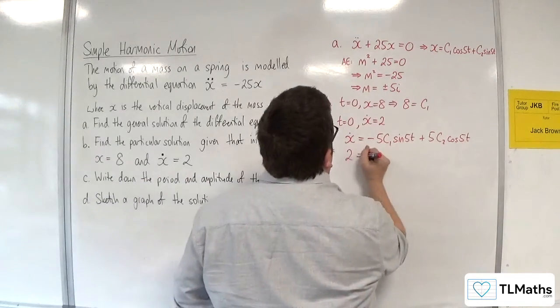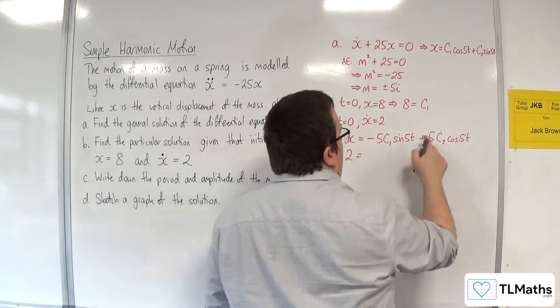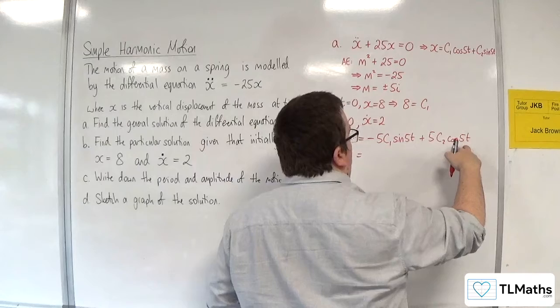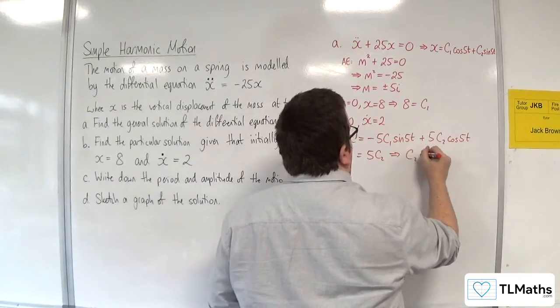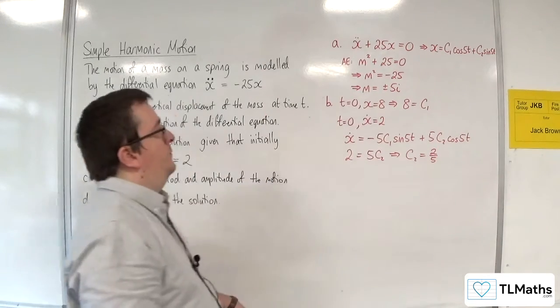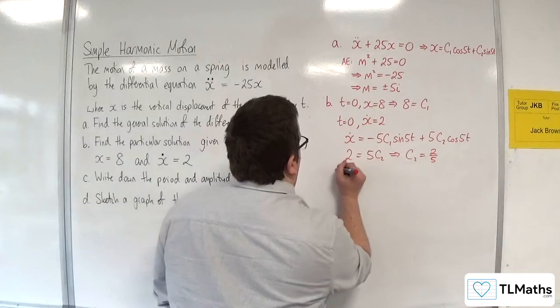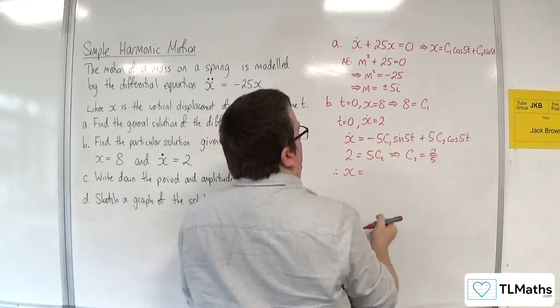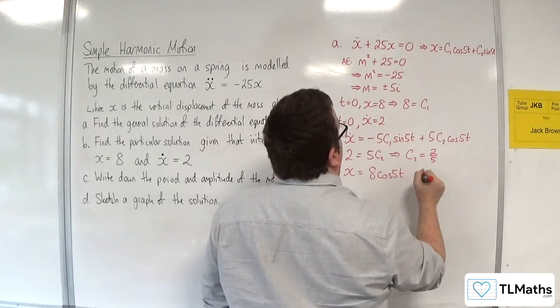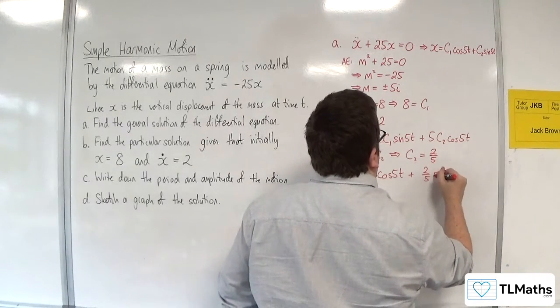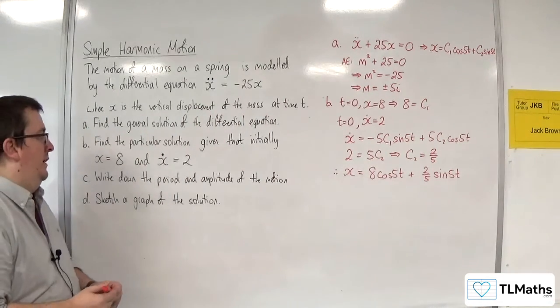So 2 is going to be equal to, if t is 0, this is going to be 0, and cosine of 0 is 1. So I get 5c₂. So that means that c₂ has got to be 2/5. So I've now got c₁ and c₂. Therefore, x is equal to 8 cosine of 5t plus 2/5 sine of 5t. So that is my particular solution.